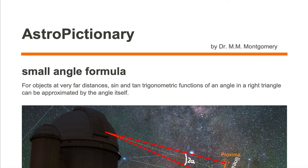Let's look at the small angle formula. For objects at very far distances, sine and tan trigonometric functions of an angle in a right triangle can be approximated by the angle itself.